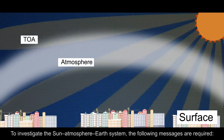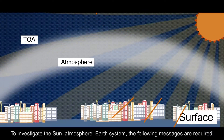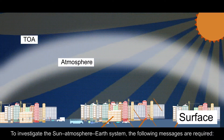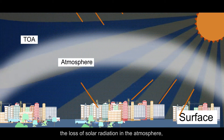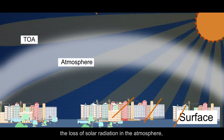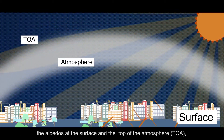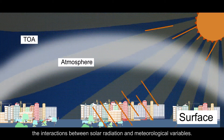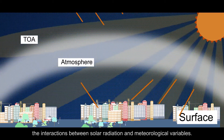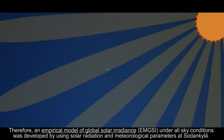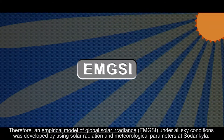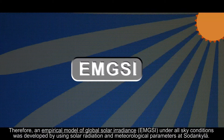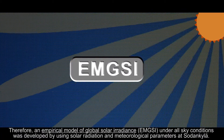To investigate the sun-atmosphere-earth system, the following measurements are required: variations of solar radiation at the surface and the top of the atmosphere, the loss of solar radiation in the atmosphere, the albedos at the surface and the top of the atmosphere, and the interactions between solar radiation and meteorological variables. Therefore, an empirical model of global solar irradiance under all sky conditions was developed by using solar radiation and meteorological parameters at Sodankyla.